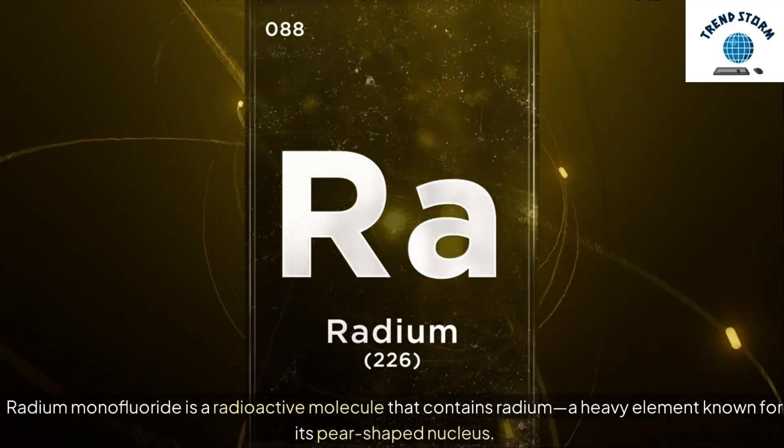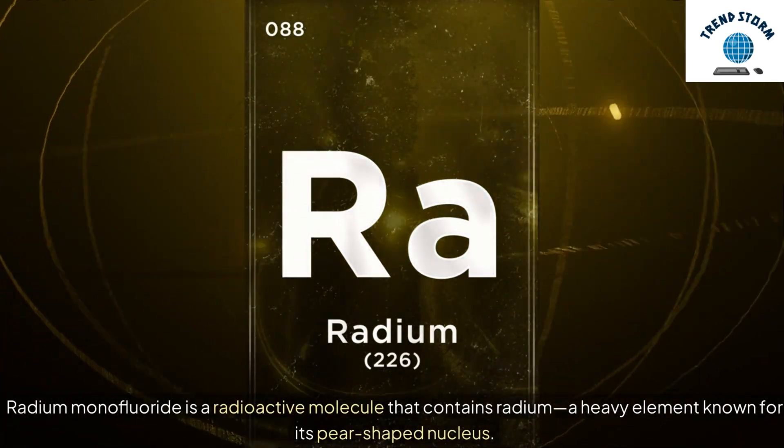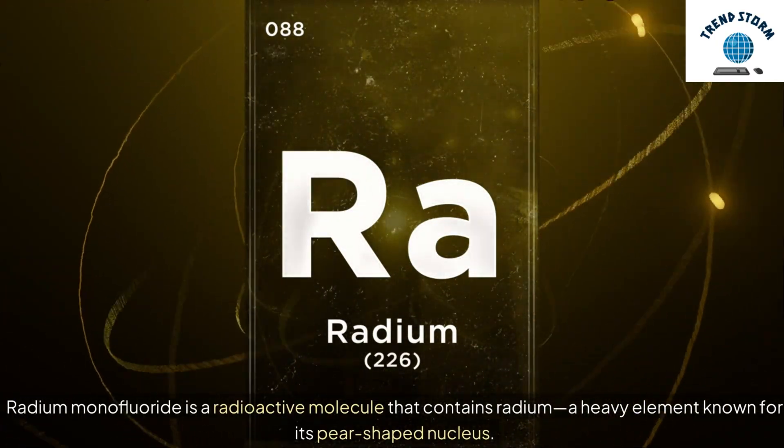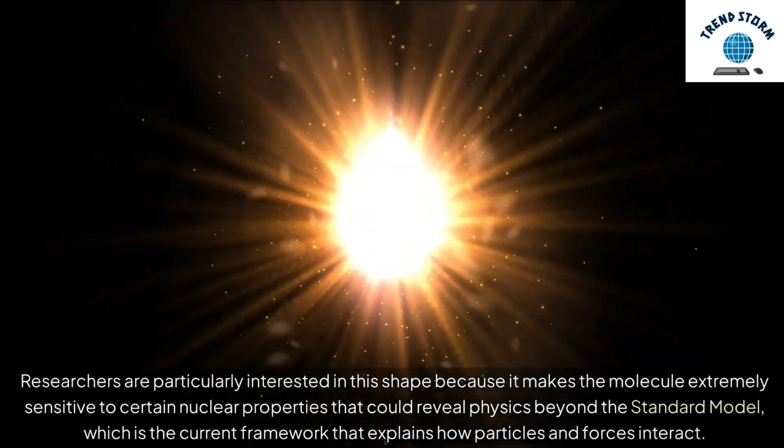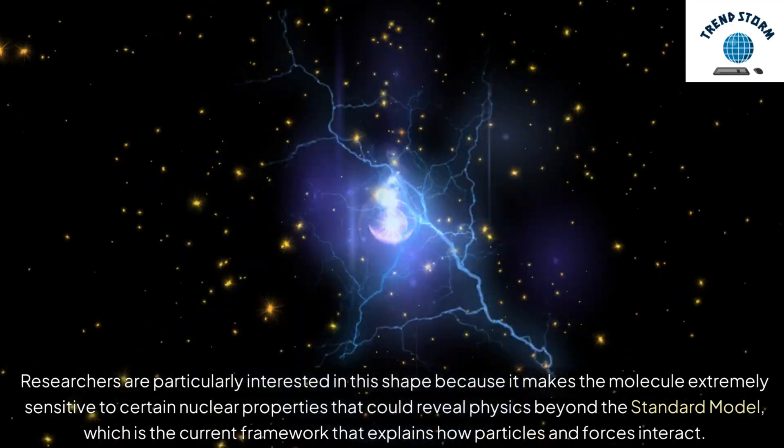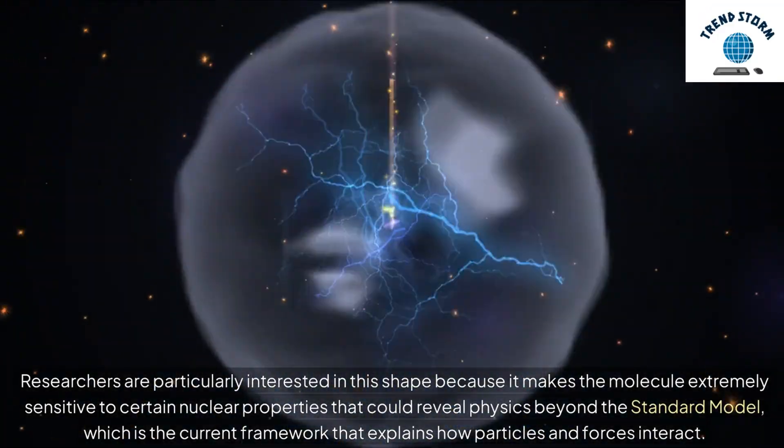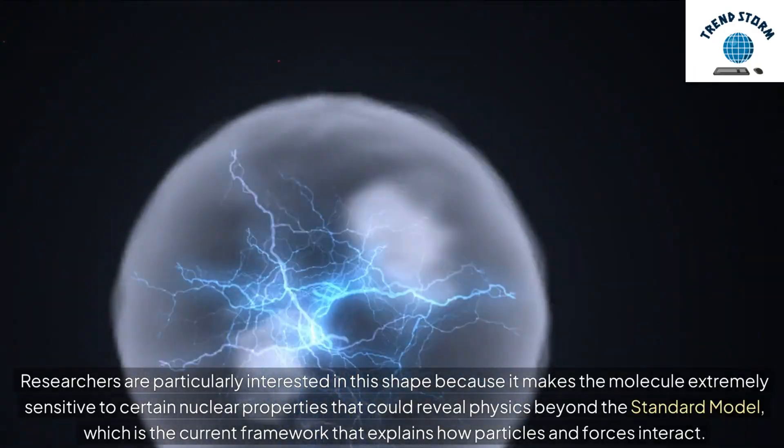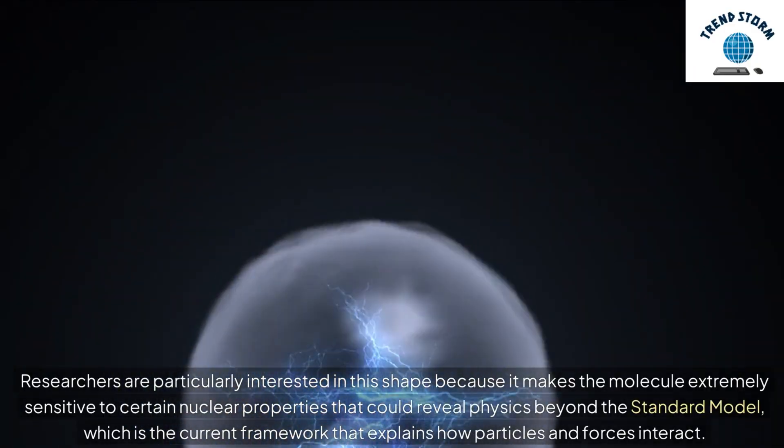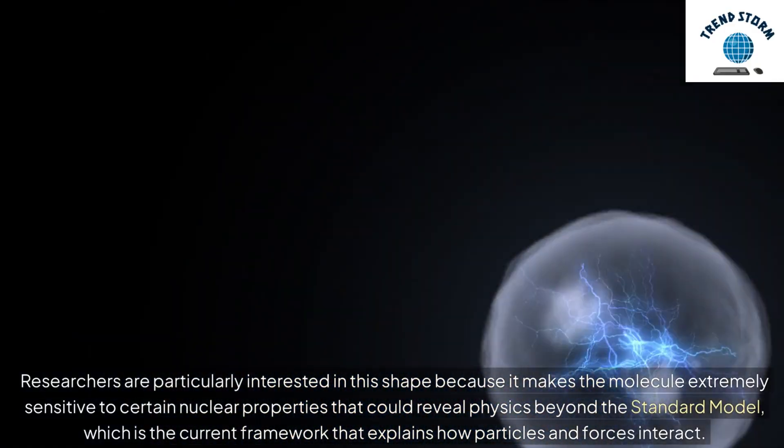Radium monofluoride is a radioactive molecule that contains radium, a heavy element known for its pear-shaped nucleus. Researchers are particularly interested in this shape because it makes the molecule extremely sensitive to certain nuclear properties that could reveal physics beyond the Standard Model, which is the current framework that explains how particles and forces interact.